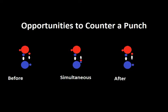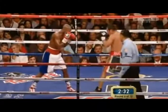I've drawn a diagram to illustrate the three main opportunities to counter an opponent's punch. In the picture on the far left, the boxer in blue punches the boxer in red before the boxer in red can even throw his punch. In the middle picture, the boxer in blue parries the boxer in red's punch while simultaneously hitting him with his own punch. On the right, the boxer in red has already thrown a punch and is pulling back, and the boxer in blue hits him as he's pulling back or after he pulls back.